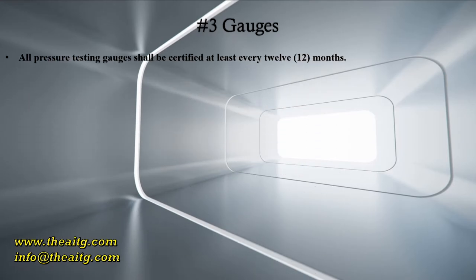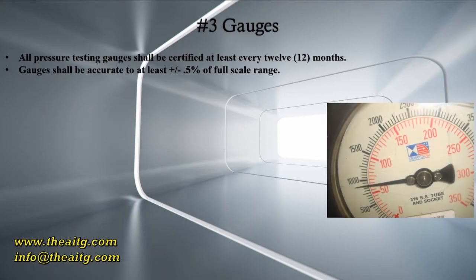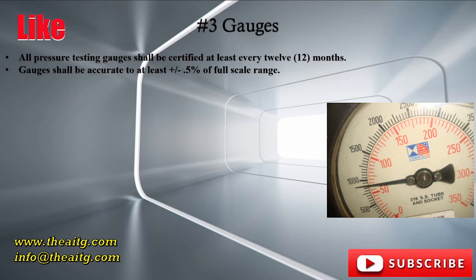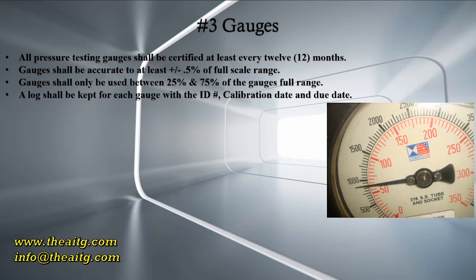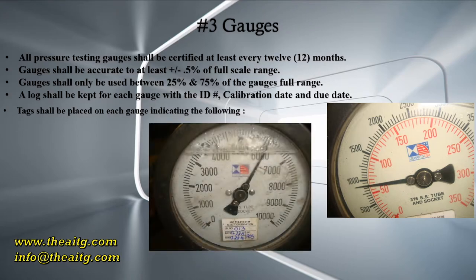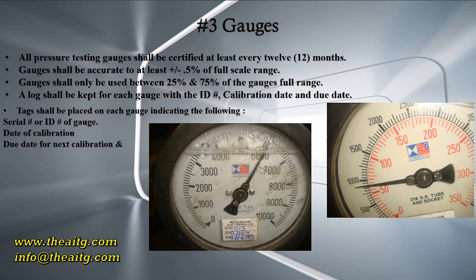Gauges: all pressure testing gauges will be certified at least every 12 months. Gauges shall be accurate to at least plus or minus 0.5% of the full scale range, and shall only be used between 25% and 75% of the gauge's full range. A log shall be kept for each gauge with the ID number, calibration date, and due date. Tags shall be placed on each gauge indicating the serial number or ID number, date of calibration, due date for next calibration, and company performing the calibration.